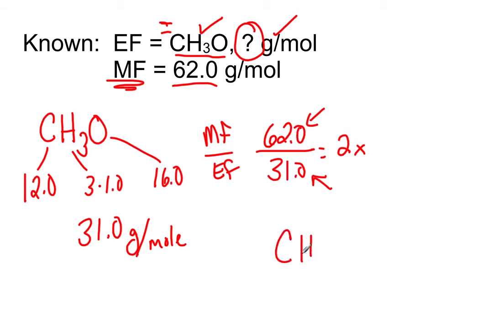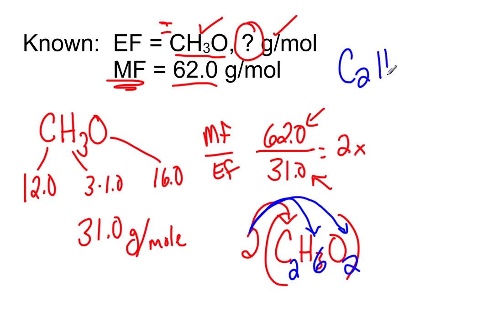So, if the empirical formula is CH3O, and we multiply this by 2, it's going to be C2, 2 times 3 is 6, and then 2 times the imaginary one is two. So, C2H6O2 is the molecular formula for this particular compound.